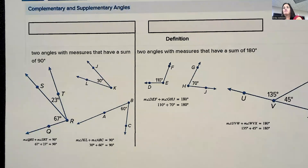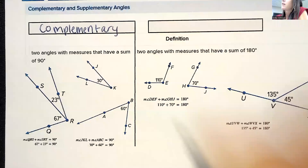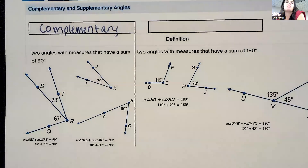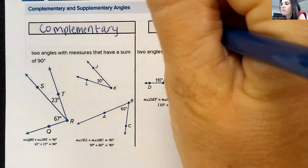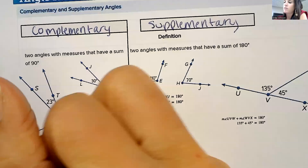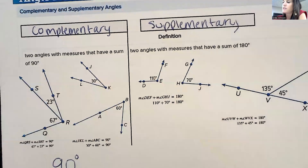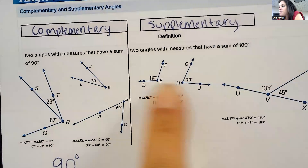Two angles that have a sum of 90 are complementary angles. Complementary angles are two angles that add up to 90. Do you guys remember what two angles that add up to 180 are called? That is supplementary. So if they tell us that two angles are complementary, we know that means they are going to equal 90 degrees together. They don't have to necessarily be right together — they could be apart. Those are still complementary angles if they sum up to 90 degrees.